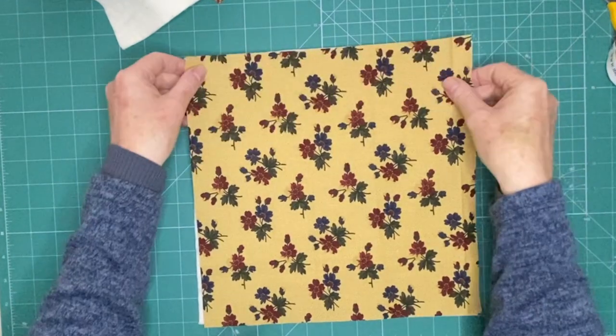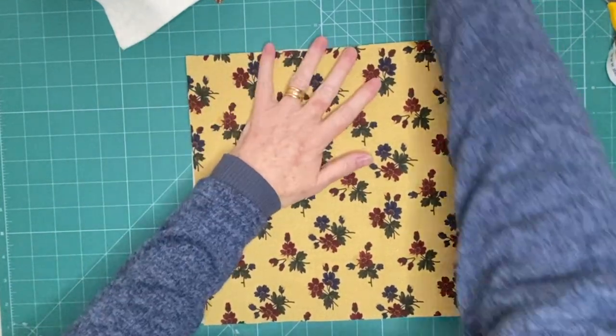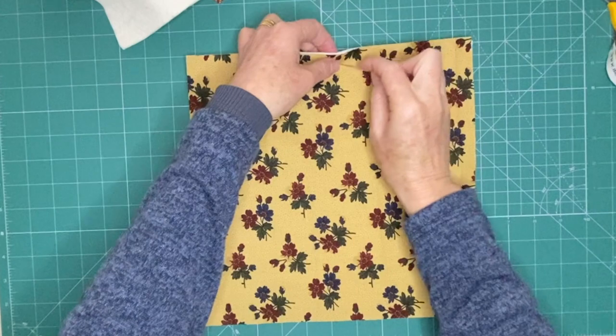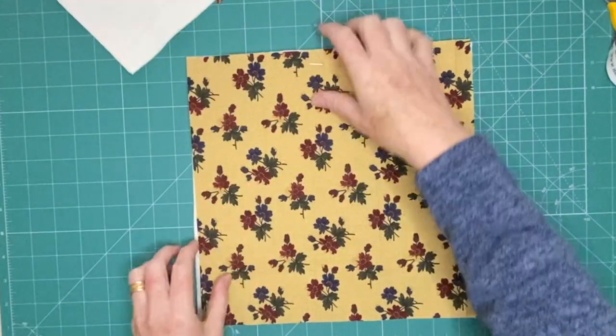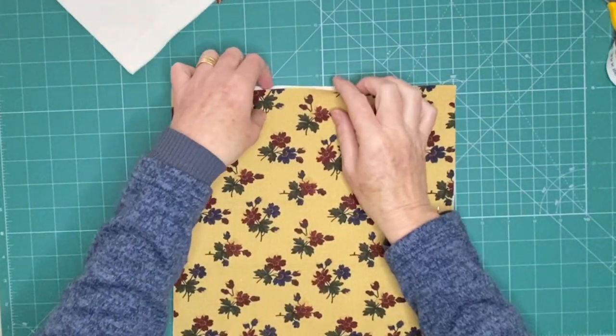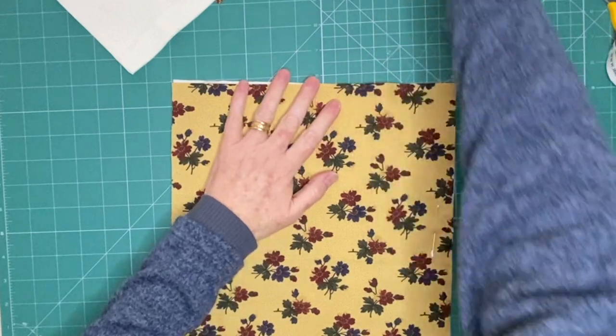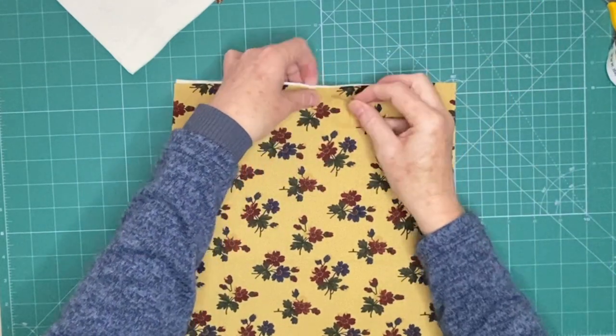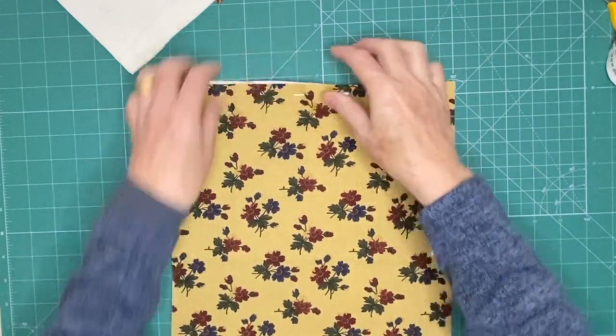So you're going to have two pieces of fabric and two pieces of batting that you're then going to pin together. One piece of fabric pinned to a piece of batting and another piece of fabric pinned to the other piece of batting.